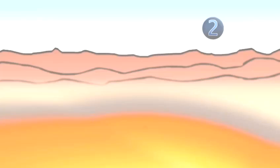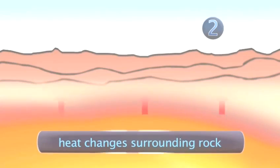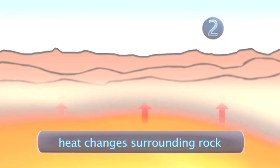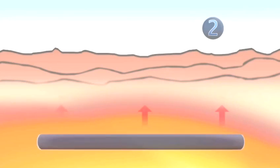Metamorphic rocks are also found around magmas, where the heat from the magma bakes and changes sedimentary or igneous rocks.